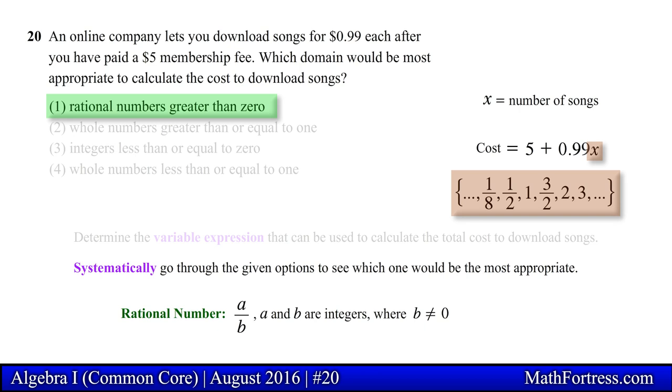If we allow the domain of x, the number of songs, to be the set of rational numbers greater than 0, then we would be able to purchase any multiple of a positive integer such as 1, 5, or 20. This means that we can also purchase a fractional portion of a song such as 1 half, 3 halves, and 1 eighth.